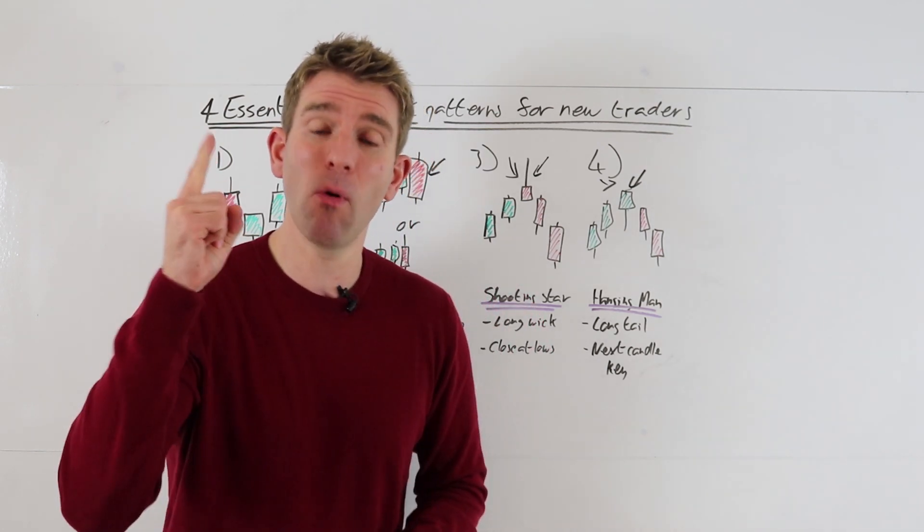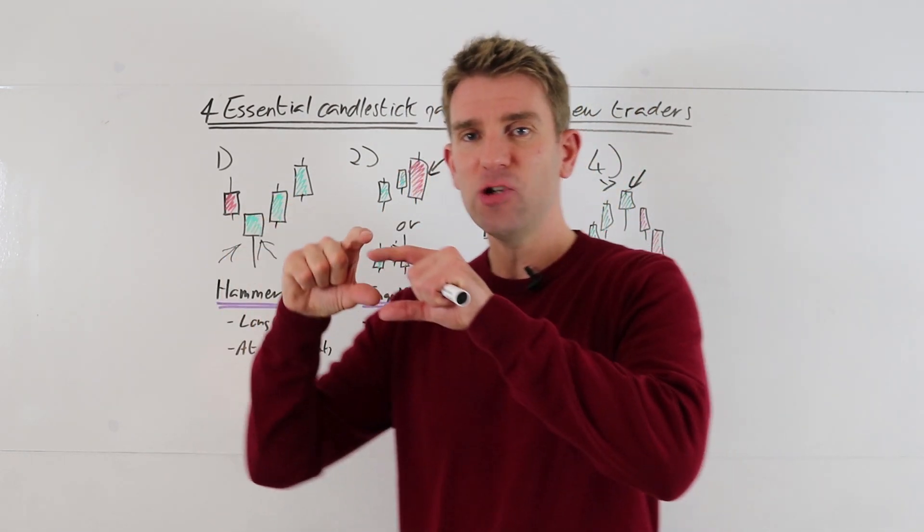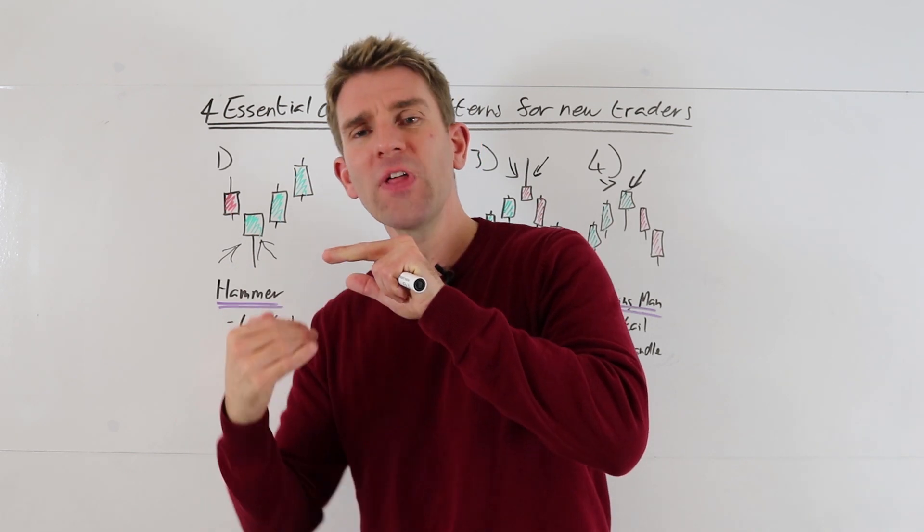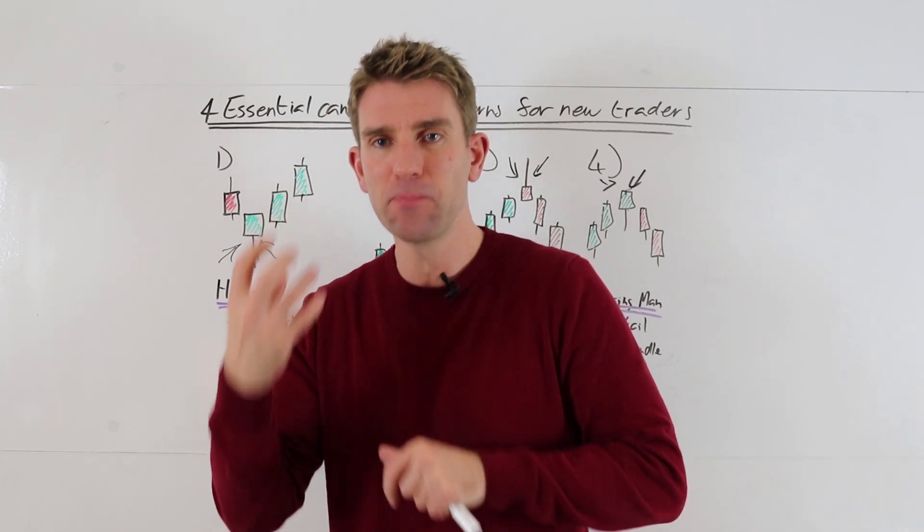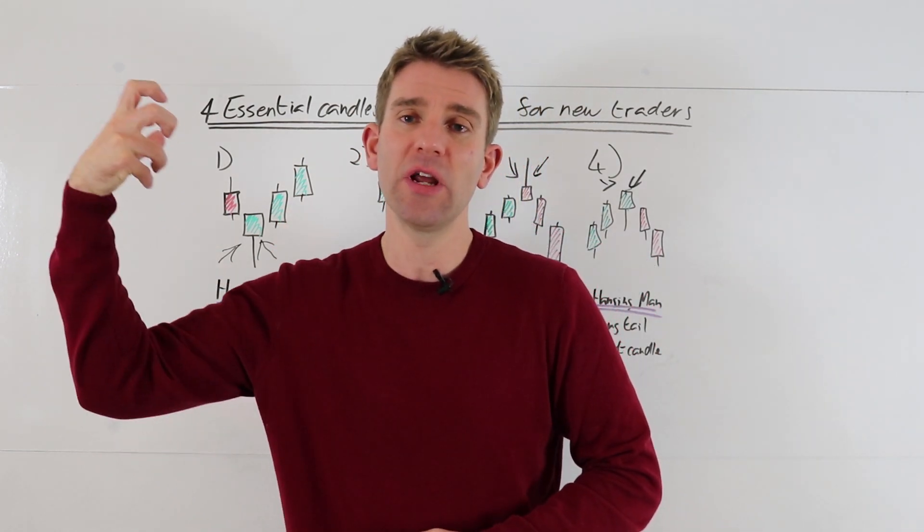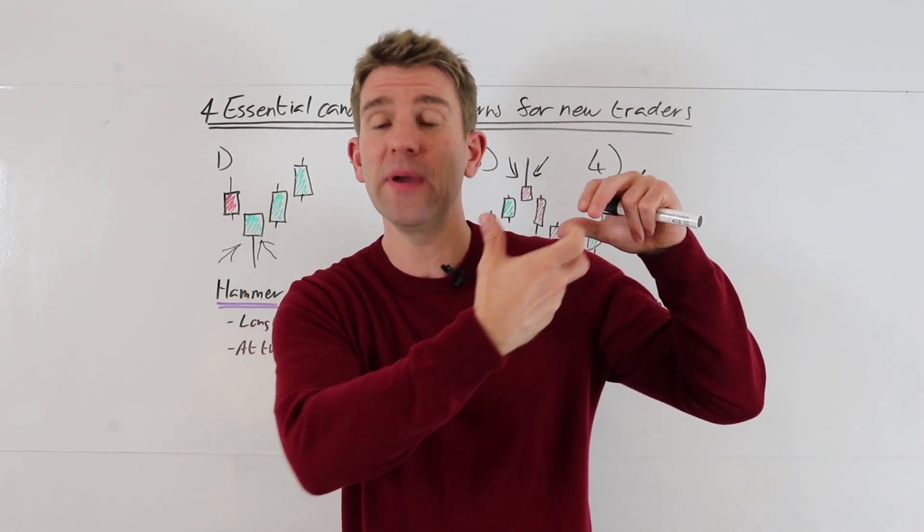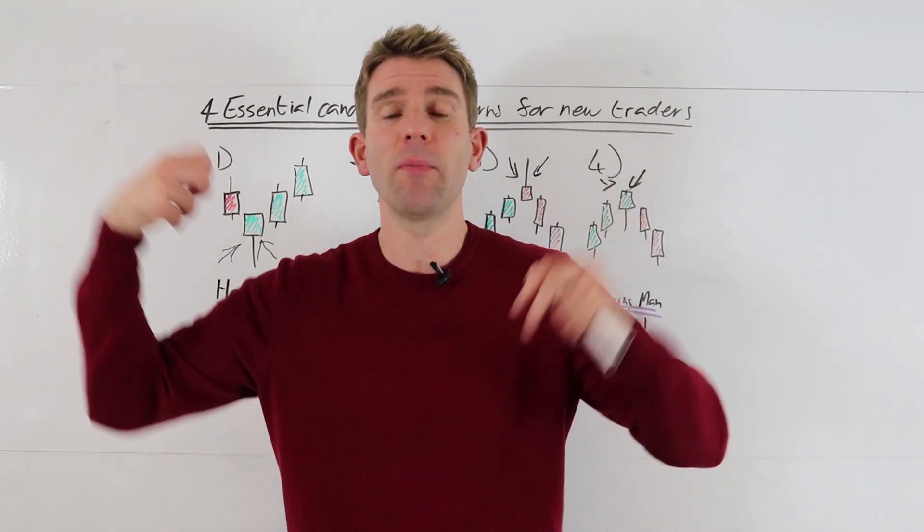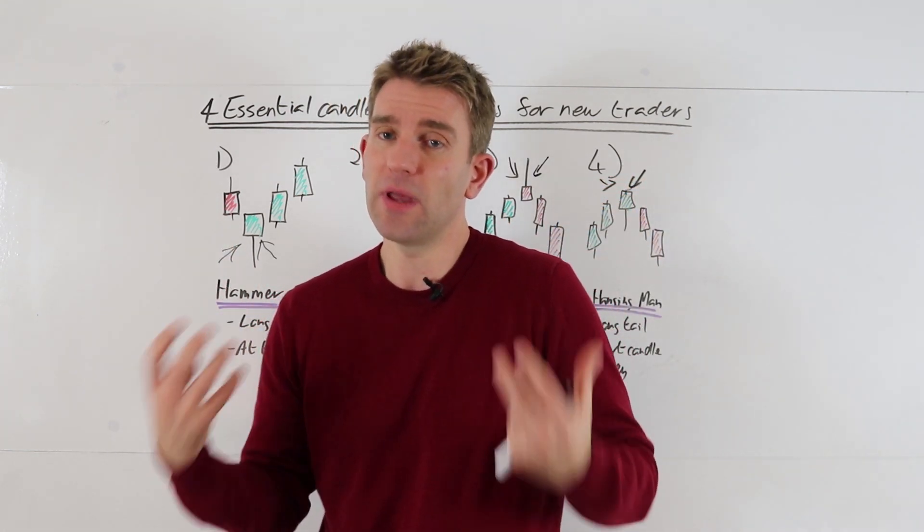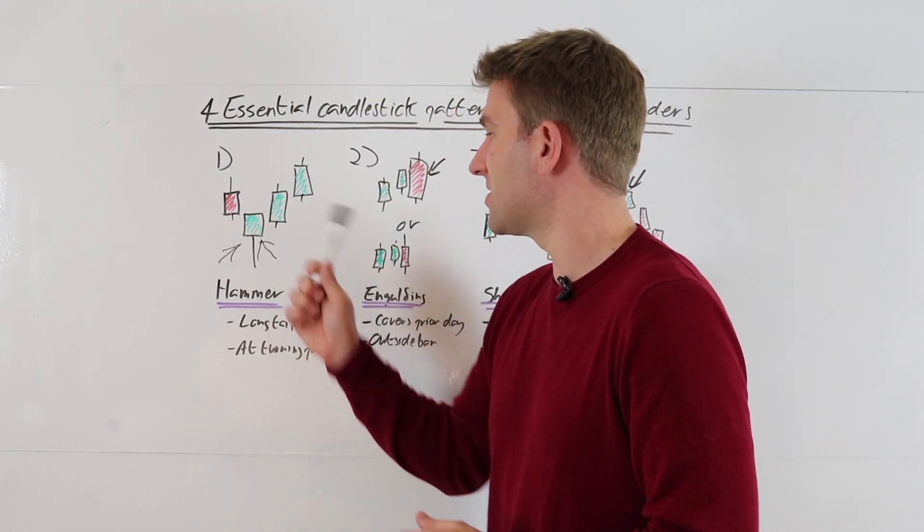Let's get going. Number one is the hammer. The hammer is really a short body with a longer tail, and this is a bullish candlestick pattern that we like to see at low turning points. This could be in an uptrend on a pullback, or it could be on a downtrend making the proper market low. That's the beauty of them—they're powerful in multiple different venues. We've got a long tail here at turning points.